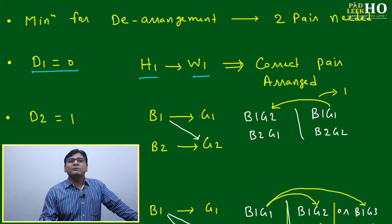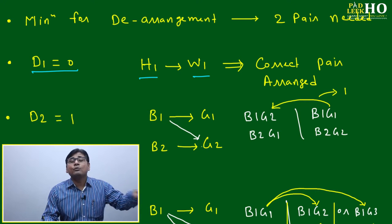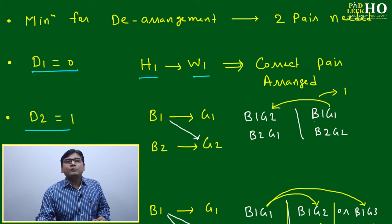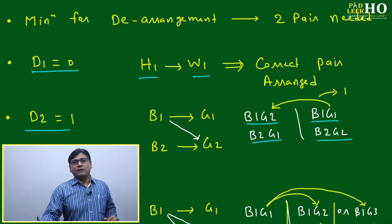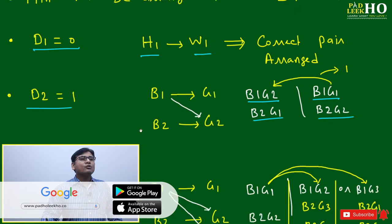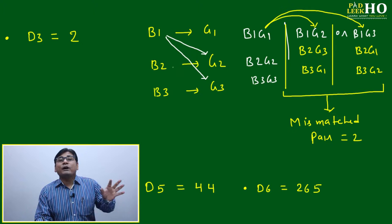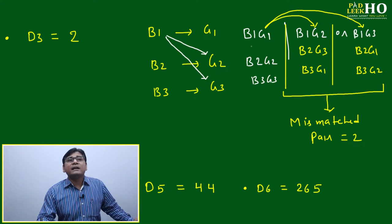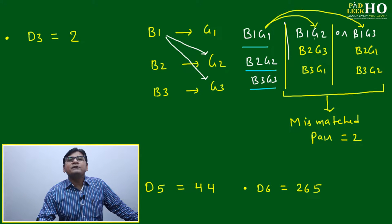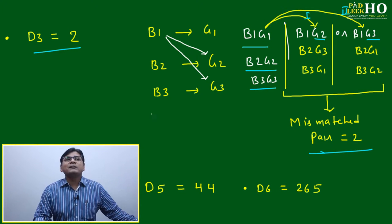D1 is always equal to zero. For D2: if two pairs exist — boy B1 with girlfriend G1 and B2 with G2 — ideally B1 goes with G1 and B2 with G2. The only mismatching possibility is B1 with G2 and B2 with G1, so D2 equals one. For D3: three boys and three girls are available. B1 can go with G2 or G3 — two mismatching options — so D3 equals two.